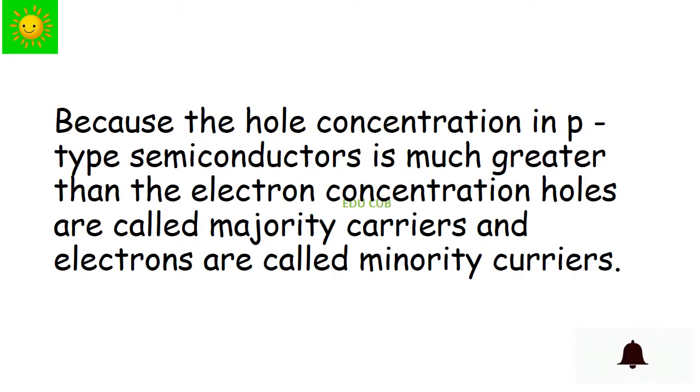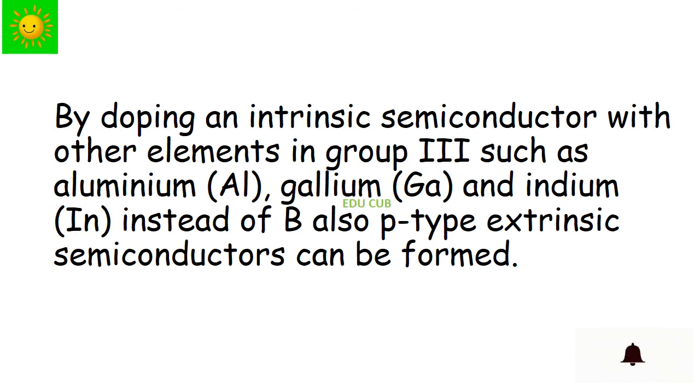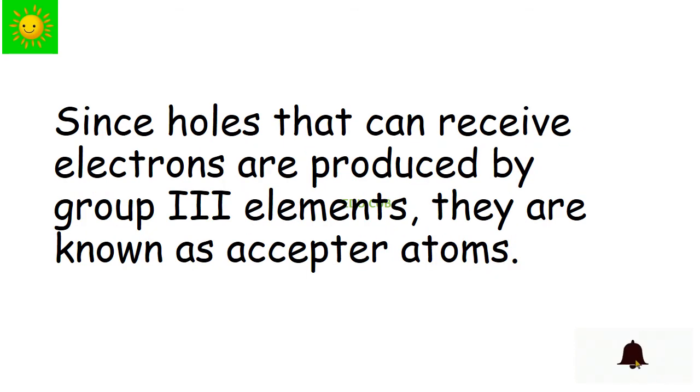Because the hole concentration in p-type semiconductors is much greater than the electron concentration, holes are called majority carriers. By doping an intrinsic semiconductor with other elements in group 3 such as aluminum, gallium and indium, p-type extrinsic semiconductors can be formed. Since holes that can receive electrons are produced by group 3 elements, they are known as acceptor atoms.